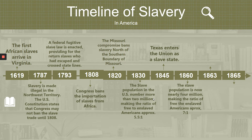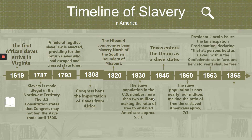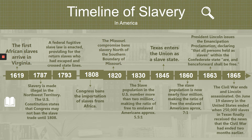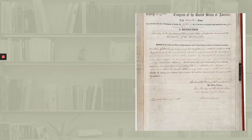In 1860, the slave population was nearly 4 million. In 1863, President Lincoln issued the Emancipation Proclamation, declaring that all persons held as slaves within the Confederate States are and henceforth shall be free. Finally, in 1865, the Civil War ended and Lincoln was assassinated. On June 19, slavery in the United States ended when 250,000 slaves in Texas finally received the news that the Civil War had ended two months earlier.